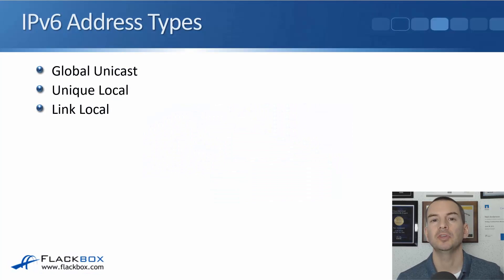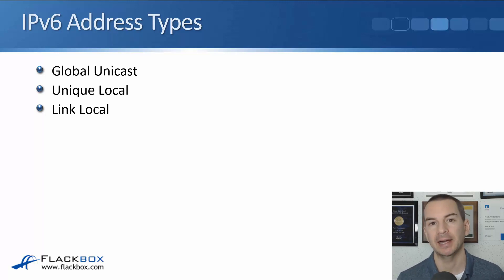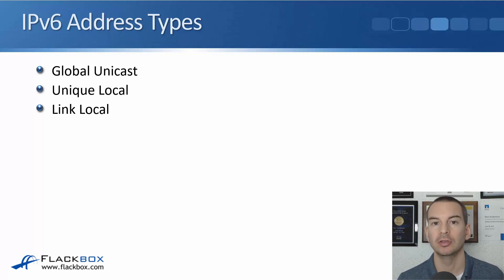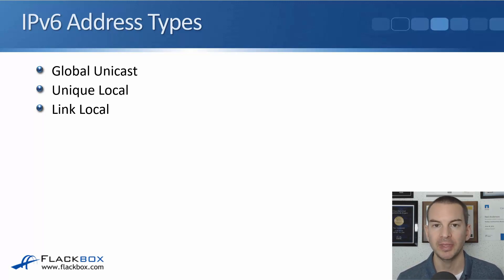In this lecture, you'll learn about IPv6 global unicast addresses. The different types of addresses in IPv6 are global unicast, unique local, and link local. We'll cover unique local and link local in a later lecture in this section. In this lecture, we're going to focus on global unicast.